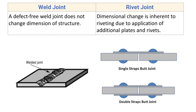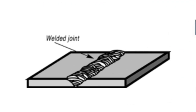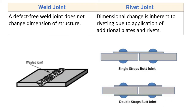A defect-free weld joint does not change the dimension of the structure. The additional reinforcement or welded metal can be removed by grinding, so the welded joint does not change the dimension. In rivet joint, dimensional changes are inherent due to the application of additional plates and rivets.